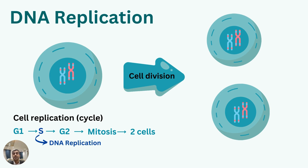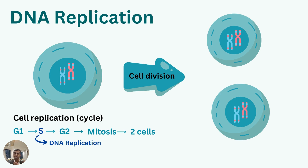DNA replication occurs during S phase. As we know, the cell cycle contains four different stages: G1, the first growth phase; S phase, the synthesis phase; G2, the second growth phase; and finally mitosis. DNA replication takes place in S phase only — the synthesis phase.